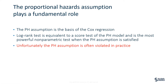The proportional hazards, or PH assumption, plays a fundamental role in both the log-rank test and the Cox regression. The proportional hazards assumption is the basis of the Cox regression. The log-rank test can be derived as a score test of the Cox model and has the highest power when the assumption is true. Any violation of the PH assumption influences the performances of the log-rank test and the Cox regression. Unfortunately, however, non-proportional hazards are often encountered in practice.